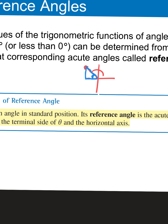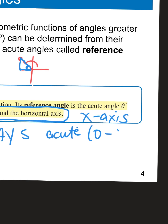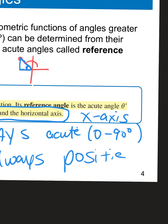A reference angle is formed between the terminal side and the horizontal x-axis. There are two things that reference angles always are: they're always acute — meaning between 0 and 90 degrees — and they're always positive. They will not be negative, and they will be less than 90 degrees. So today we're going to figure out how to find reference angles and then show you how to use them. If the angle is given in degrees, your reference angle answer should be in degrees; if in radians, give your answer in radians.